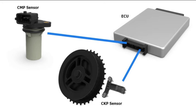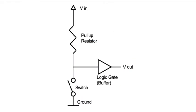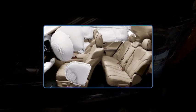ECUs function as follows. Sensors provide input data to the control unit in the form of voltage signals. The ECU processes the data signals using logic gates or data maps to determine current conditions and what is required to operate the related system. The ECU provides a voltage signal to operate an output device that can open a fuel injector, turn the headlights on, or deploy the airbags during a collision.